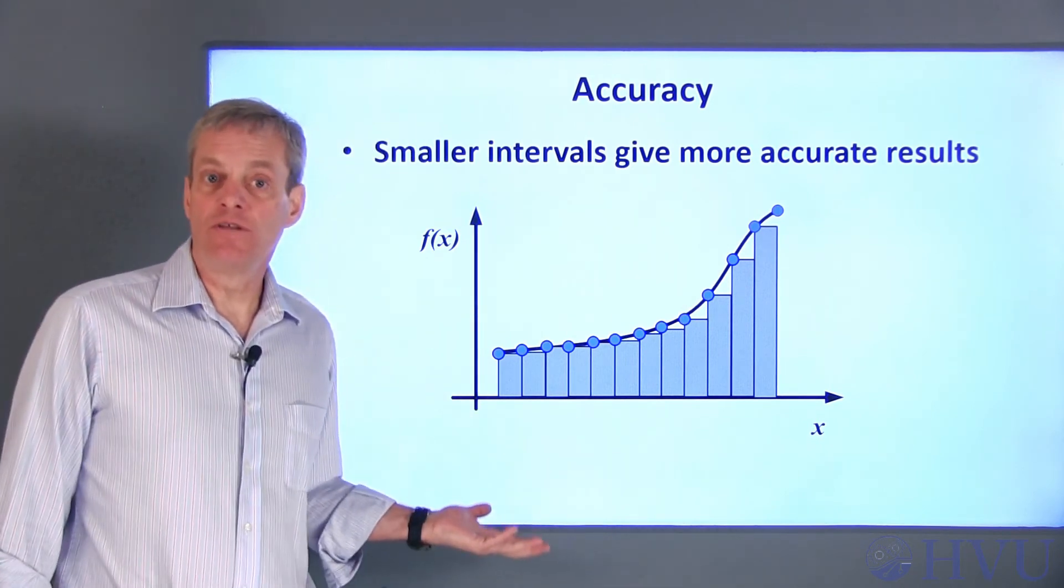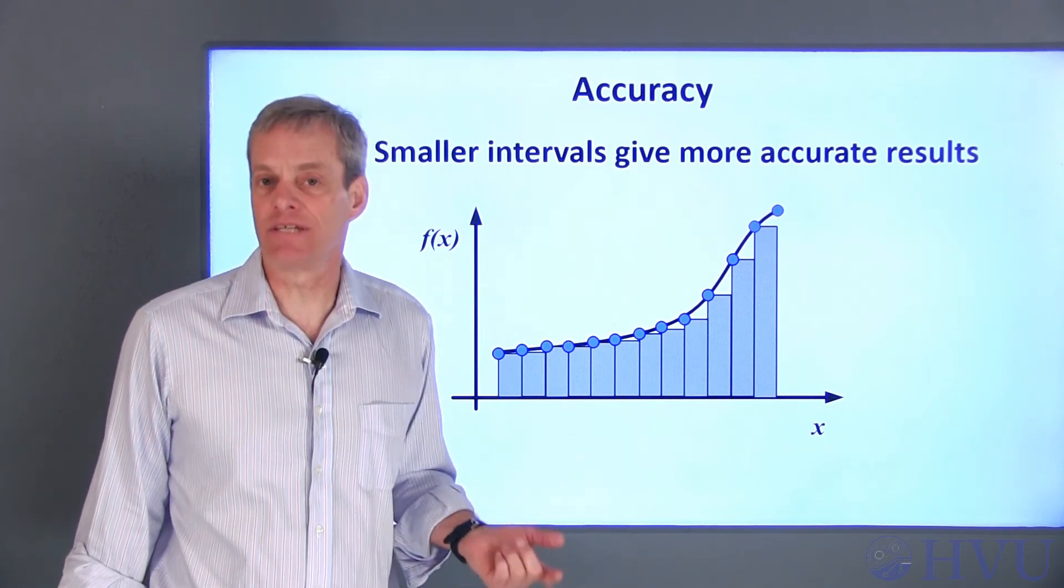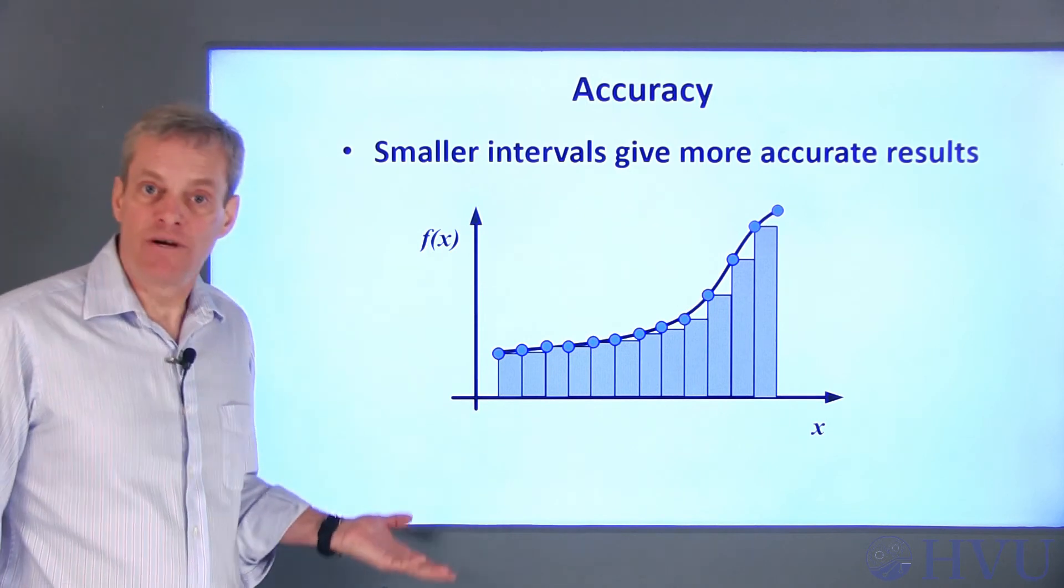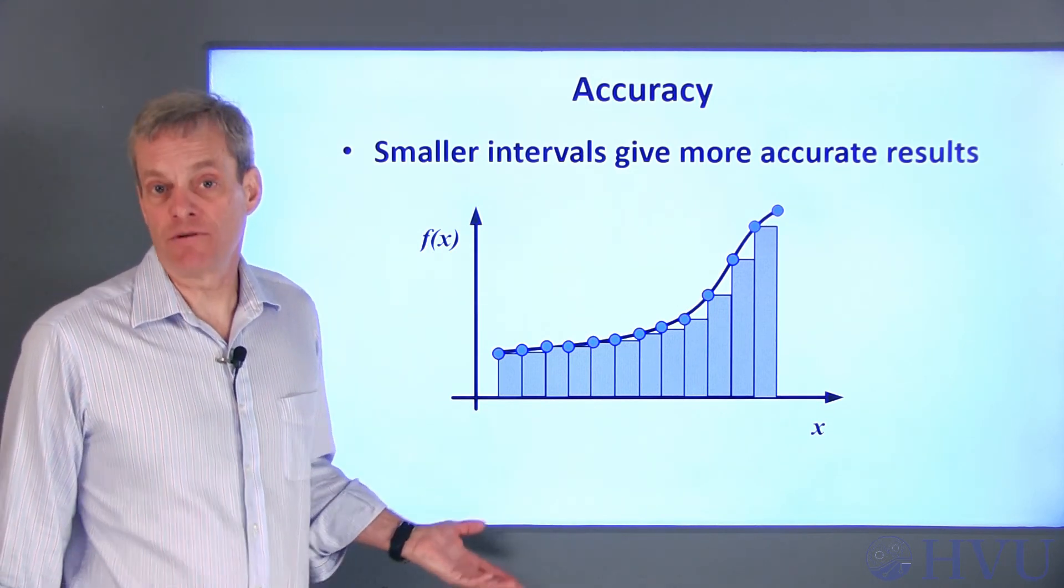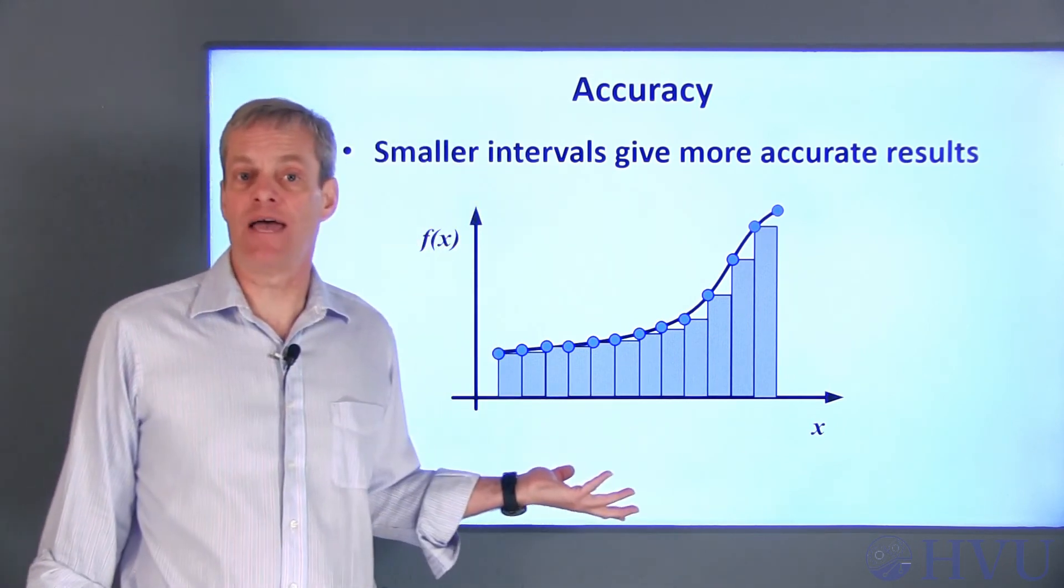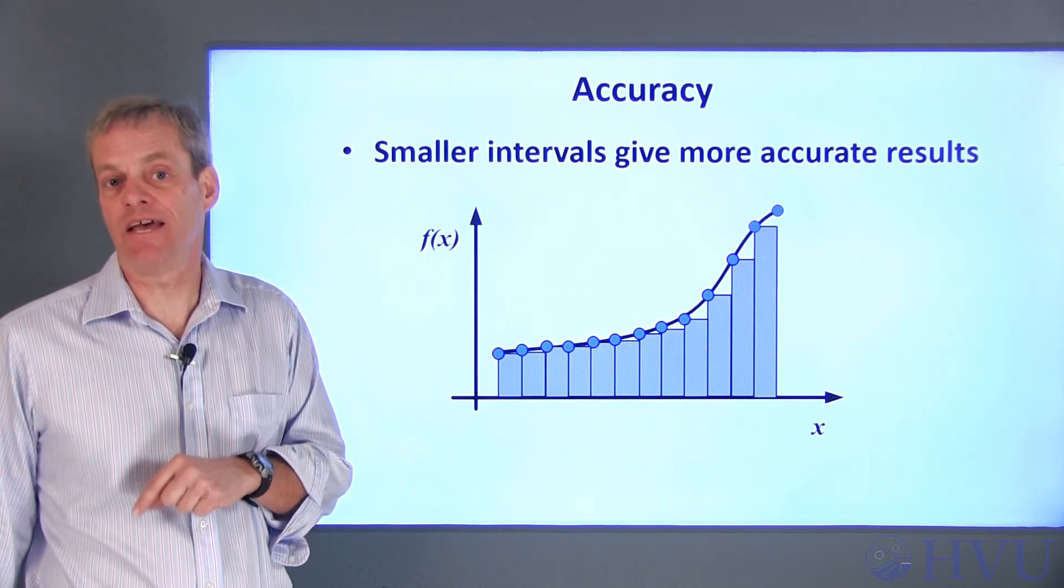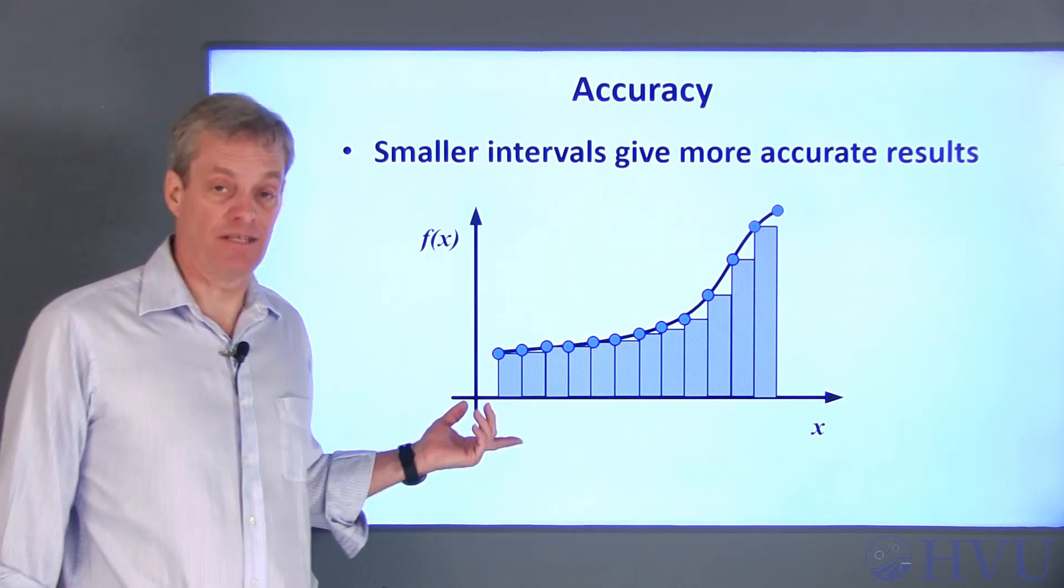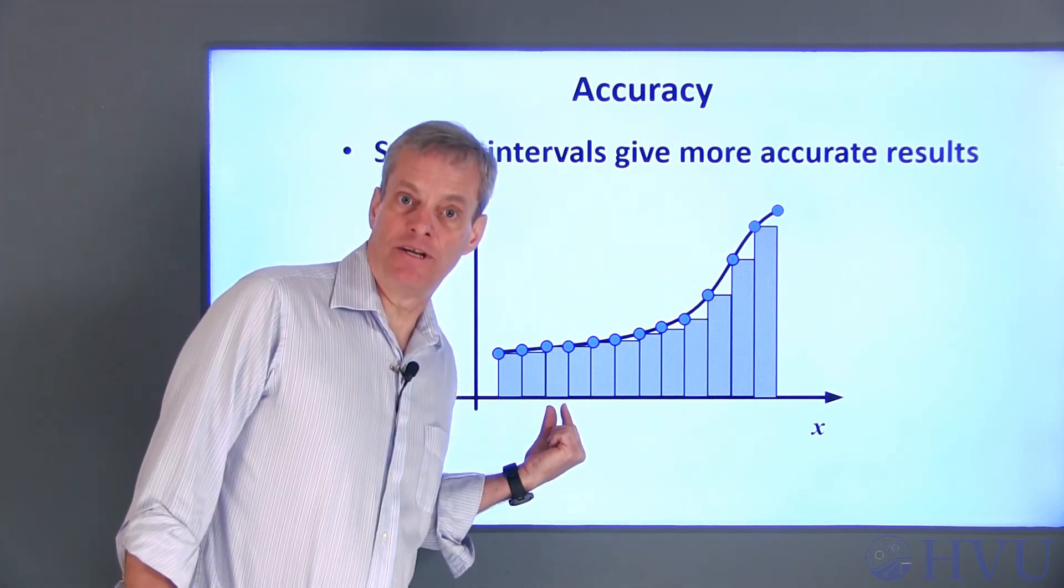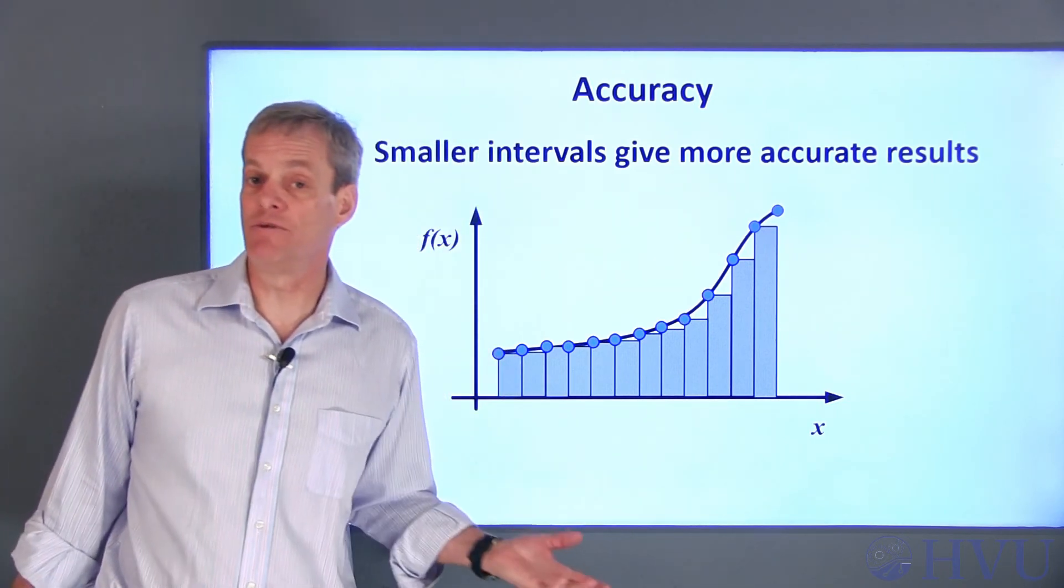As we keep reducing the width of the intervals, we get better accuracy, and most likely the difference between successive integral estimates gets smaller and smaller. A common approach for numerical integration is to choose an arbitrary subinterval width, and then keep reducing the width of the subintervals, often by halving the interval each time, and checking to see when the difference between successive estimates becomes small enough to be insignificant. Of course, if the widths of the subintervals become small enough that numerical roundoff errors are important, our errors can increase with decreasing widths.